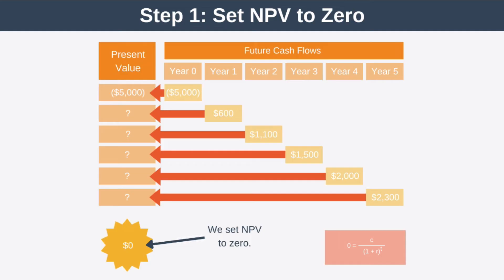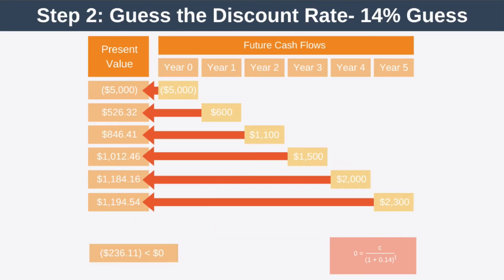For our example, we already know that a discount rate of 10% produces a net present value of $375. So the IRR must be higher than 10% to give us a zero NPV. So let's guess 14% and see what happens. Well, if we do that, then we get a negative net present value of minus $236. Obviously, that's less than 0, so that means we've guessed too high for our IRR.